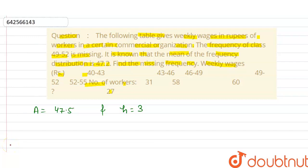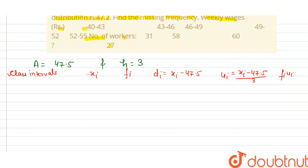That is: class intervals, xi, fi, di is equal to xi minus 47.5, and here ui is equal to xi minus 47.5 divided by 3. And now we calculate the fi*ui. Here class intervals are given: 40 to 43, 43 to 46, 46 to 49, 49 to 52, 52 to 55.